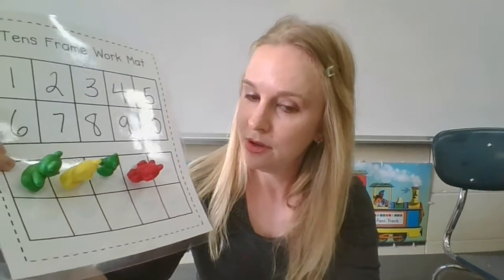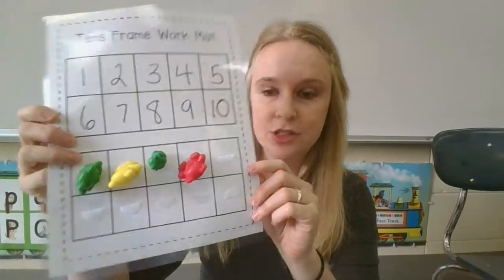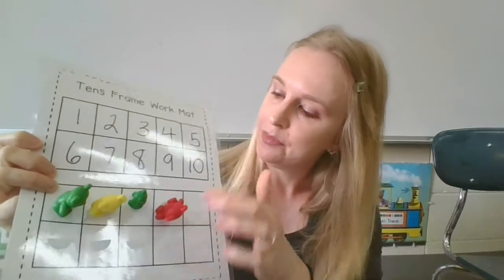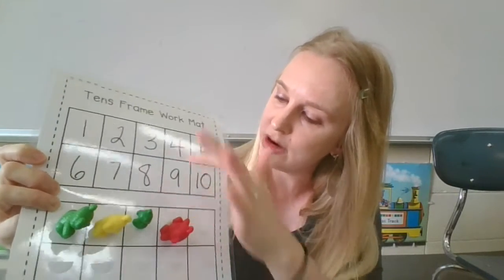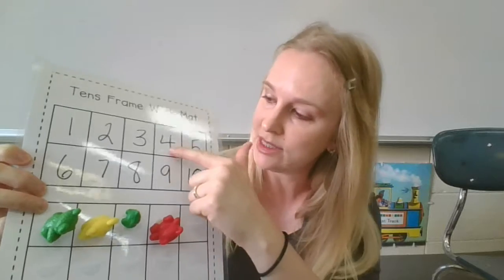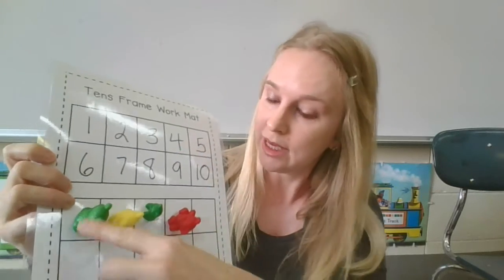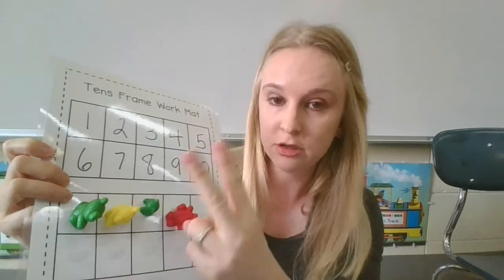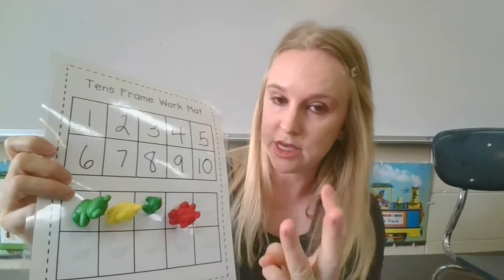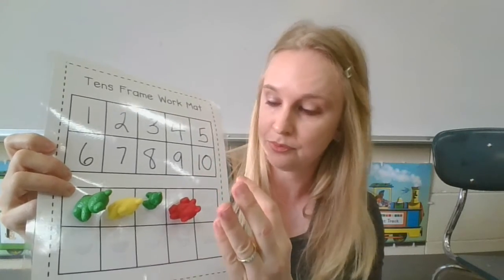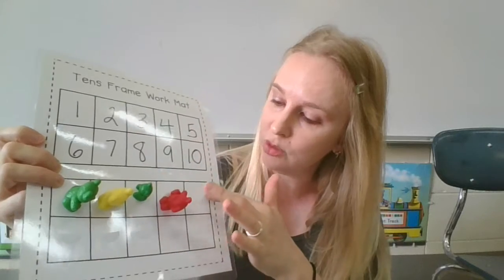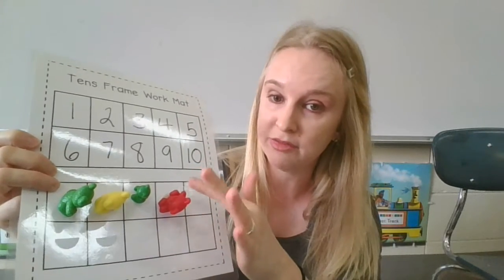Okay, how many bears does that leave us? We could either go up here and see where the last bear is, so it says 4, or we can count them. We can go 1, 2, 3, 4, or we can look at the top row and say that there's 1 less than the 5, which would also be 4.